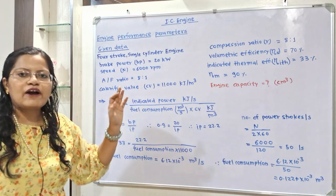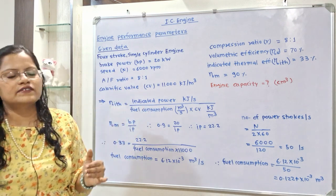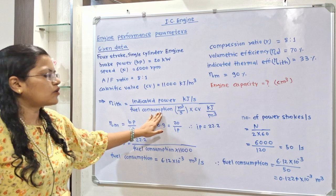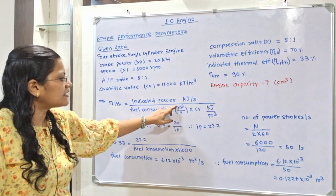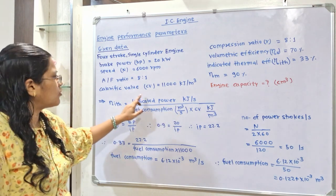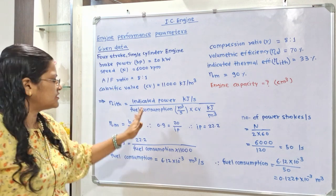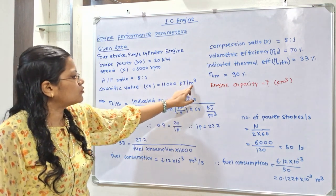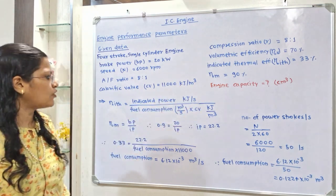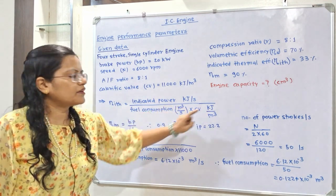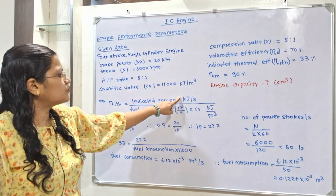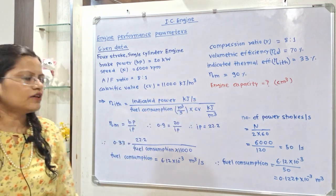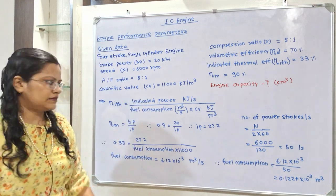Fuel consumption must be taken in meter cube per second because the fuel is in gaseous state. For solid fuel we would use kg per second, but here we use meter cube per second multiplied by calorific value in kJ per meter cube. The meter cube units cancel out, so numerator and denominator are both in kJ per second — the equation is balanced.